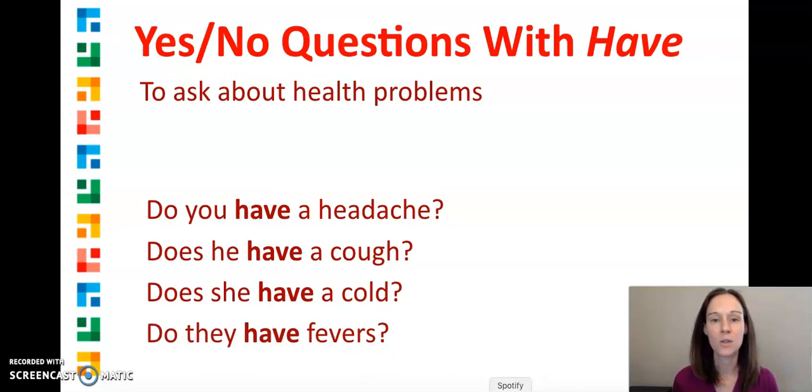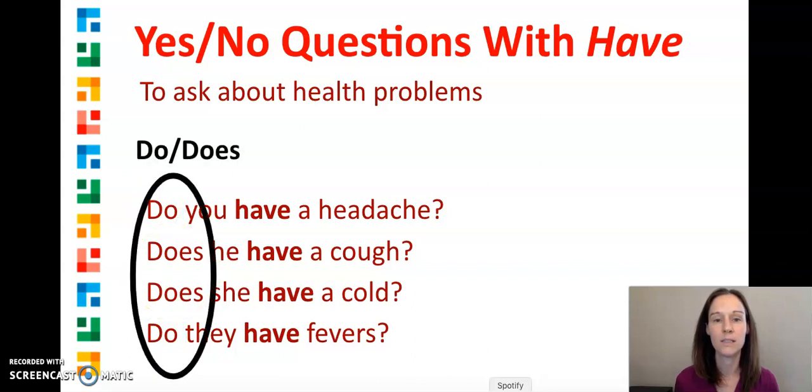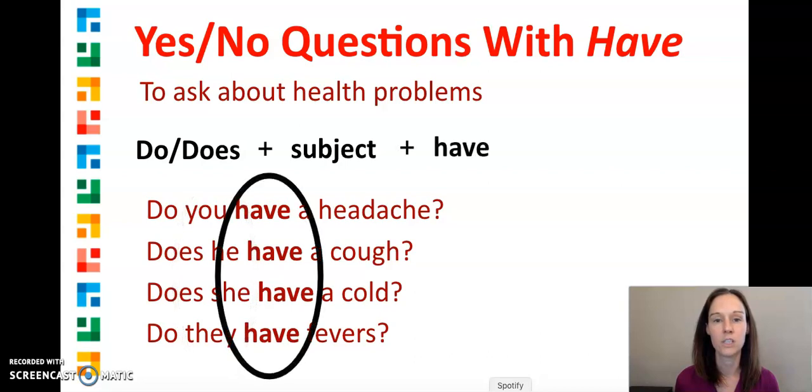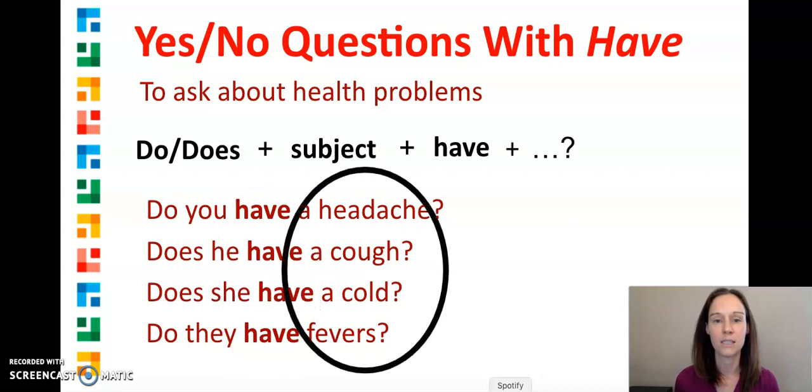When we ask questions with have, we also use do or does. With he and she, we use does, and with other pronouns, we use do. These questions will always start with do or does, then we have a subject, then a verb, which today is have, and then the rest of the sentence.